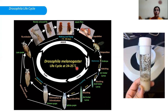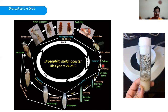Drosophila males display a complex repertoire of mating behavior evolved to achieve reproductive success. This includes tapping the female with his forelegs, singing a species-specific courtship song, and bending his abdomen to copulate. Once mating is done, the eggs are laid near or onto the surface of the media. These eggs hatch about one day later to produce tiny larvae. The different larval instars can be identified by their age, body size, spiracles, and mouth hooks.